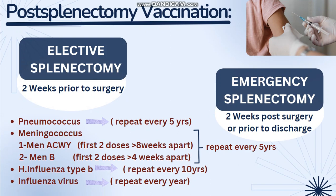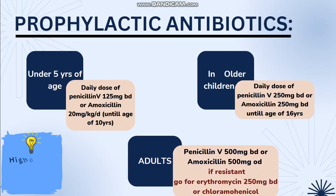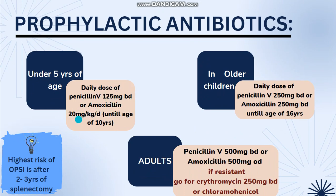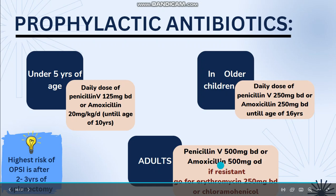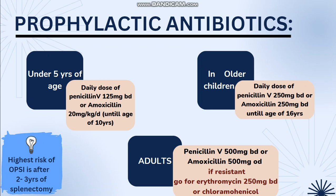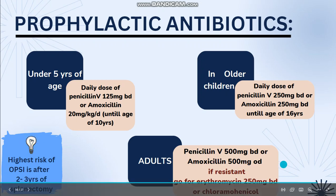The influenza virus vaccine is important as influenza can cause post-viral secondary bacterial infection, which can be lethal for the post-splenectomy patient. Regarding prophylactic antibiotics — their role is controversial — but we usually give a daily dose of penicillin V 125 mg BD or amoxicillin 20 mg/kg/day until the age of 10 years for children under five. In older children, we give penicillin V 250 mg BD or amoxicillin 250 mg BD until age 16. For adults, penicillin V 500 mg BD or amoxicillin 500 mg BD. In penicillin-resistant patients, we use erythromycin 250 mg BD or chloramphenicol.